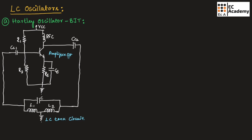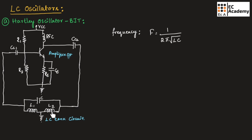The working of the circuit is the same. The amplifier circuit amplifies the signal and the tank circuit produces the required oscillations. Initially, thermal noise is taken as input to the amplifier circuit, amplified, and fed back to the LC tank circuit to produce the required oscillations. The frequency of oscillation of the Hartley oscillator is F = 1 / (2π√LC). Since we are using two inductors, we find the equivalent inductance: F = 1 / (2π√(L_eq × C)).